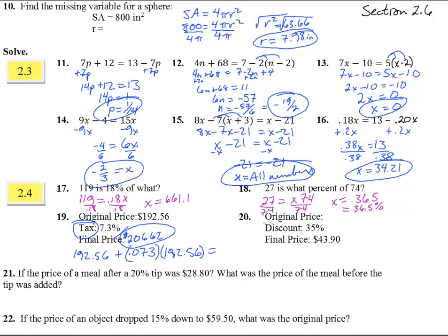Number 20. Here we have a discount, which means it's going to be subtraction, but notice we don't have the original. I'm going to put a P there for original price. And it's going to be that the price subtracts off 35% of the price, and it ends up being 43.90. Notice we can't take that 35% times the 43.90. It's a different amount.